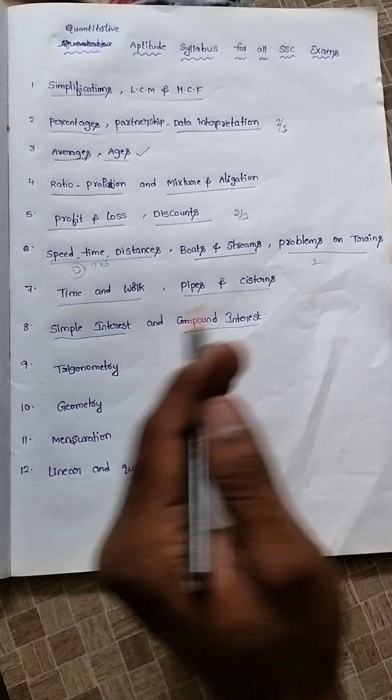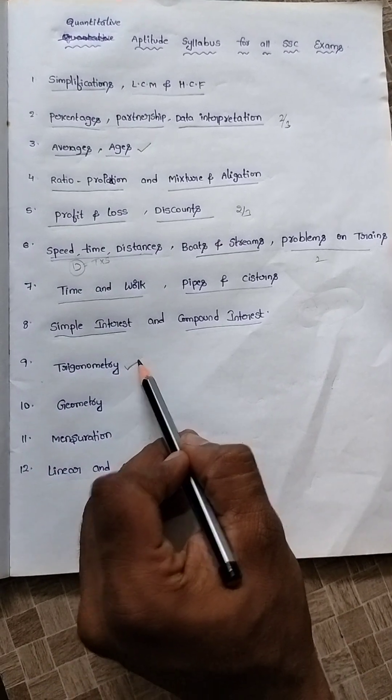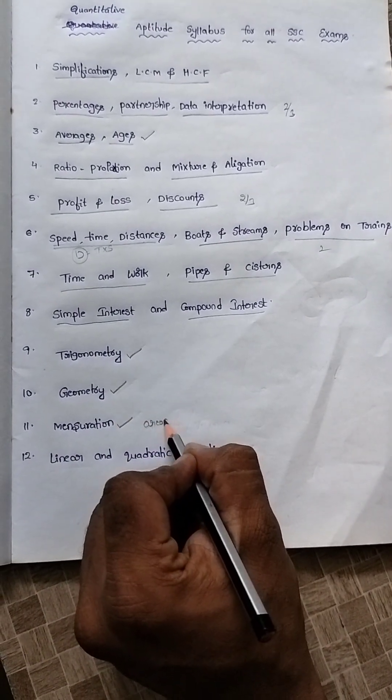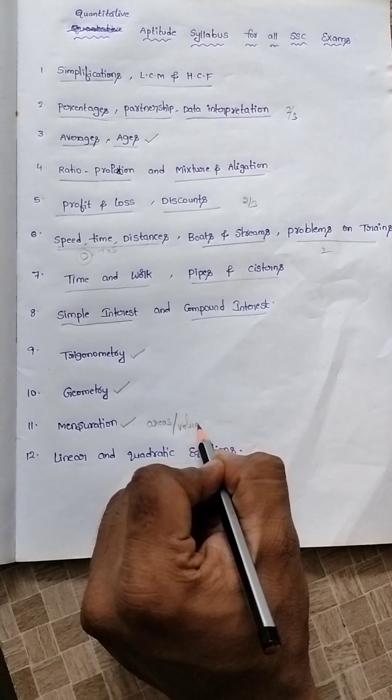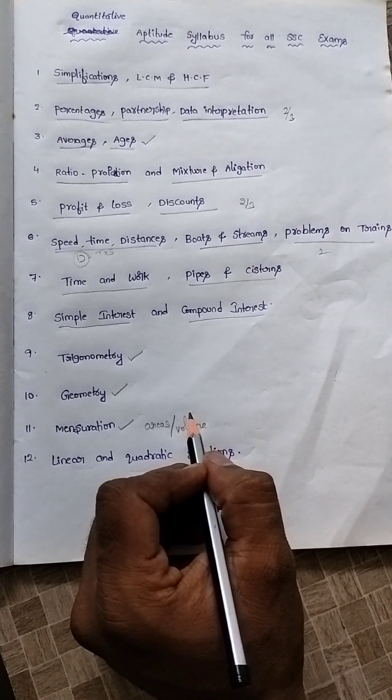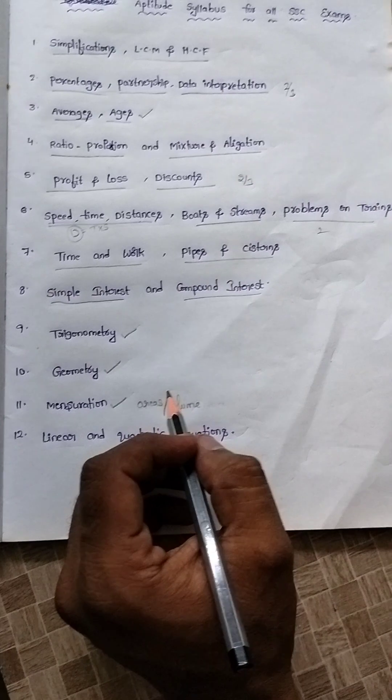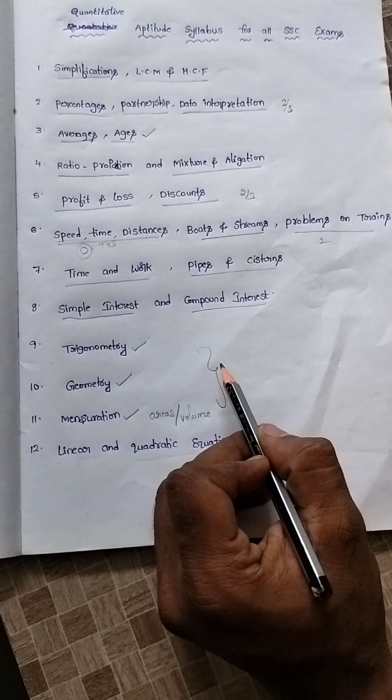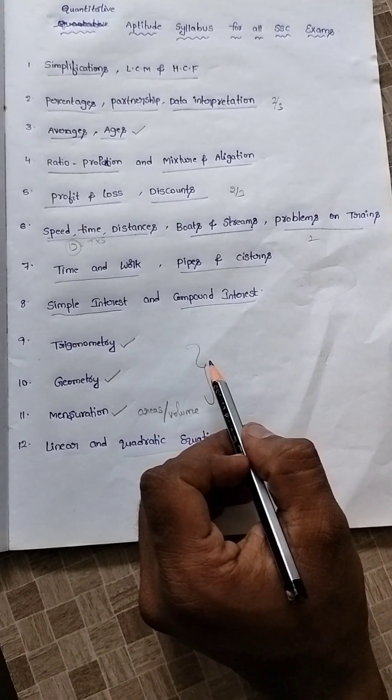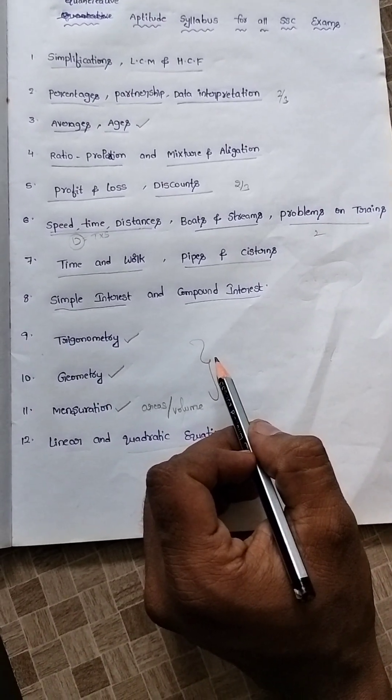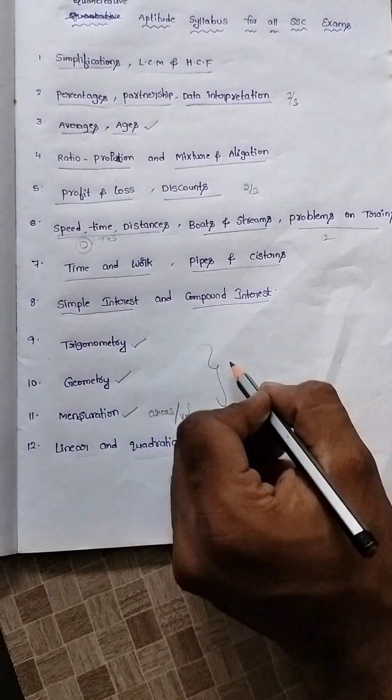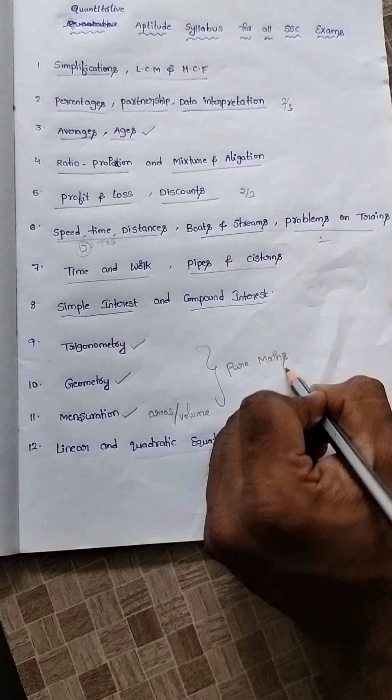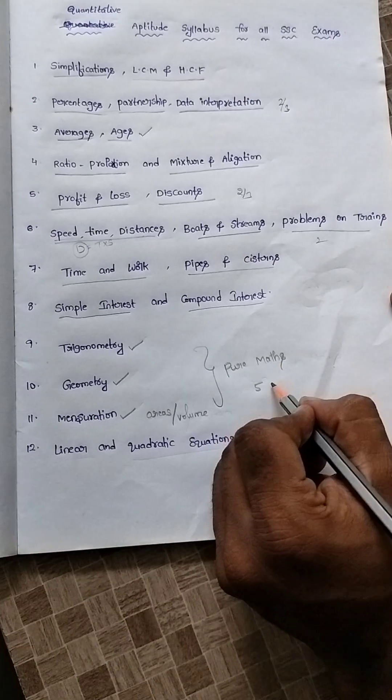Then coming to pure maths. This is the trigonometry, geometry, and mensuration. Here only it will come: areas and volumes like cone, sphere, cylinder, square, rectangle, cuboid, cube. All will come into the pure maths. We will tell formula-based as well as shortcut-based also. Both will help you. It is called pure math. Nowadays, from this we are getting 5 times 5 sums, 5 problems.